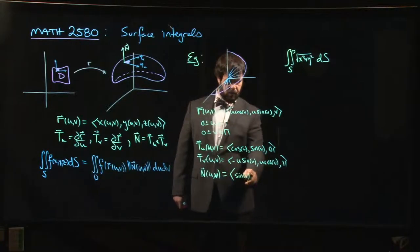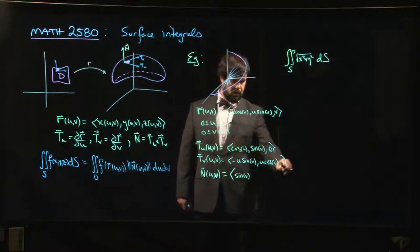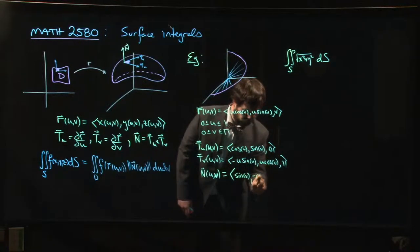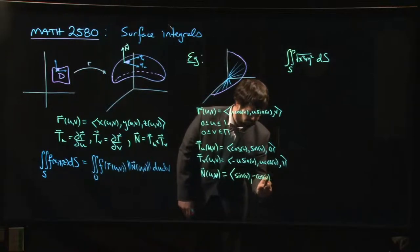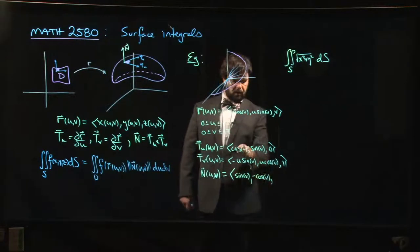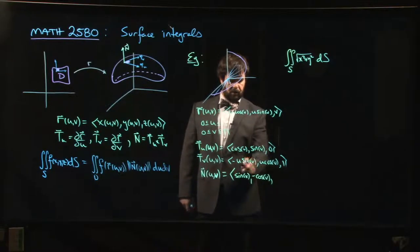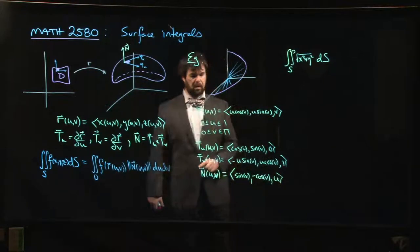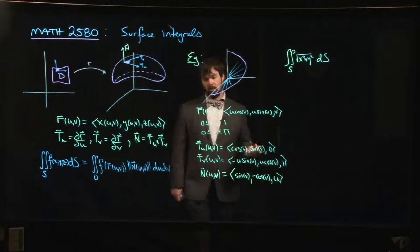And then for the y component, 0 minus cos v, and the last one we do this 2 by 2 here. So u cos squared plus u sin squared, sin squared plus cos squared is 1, so we simply get u. So there's our normal vector.